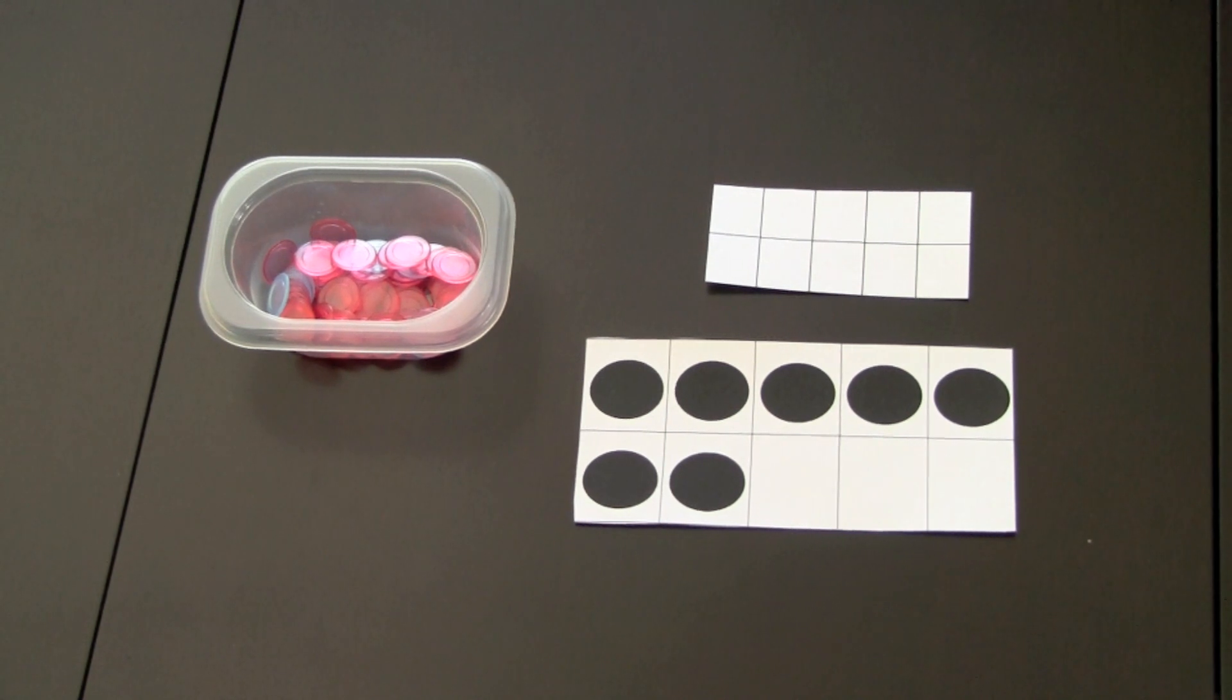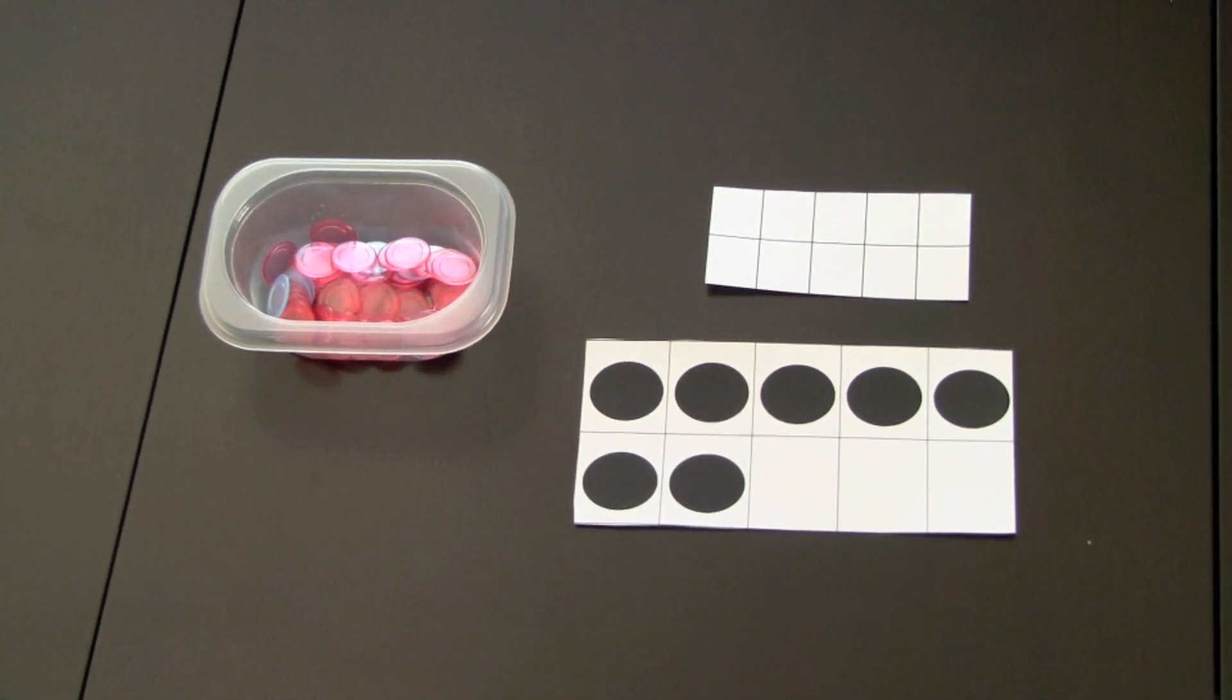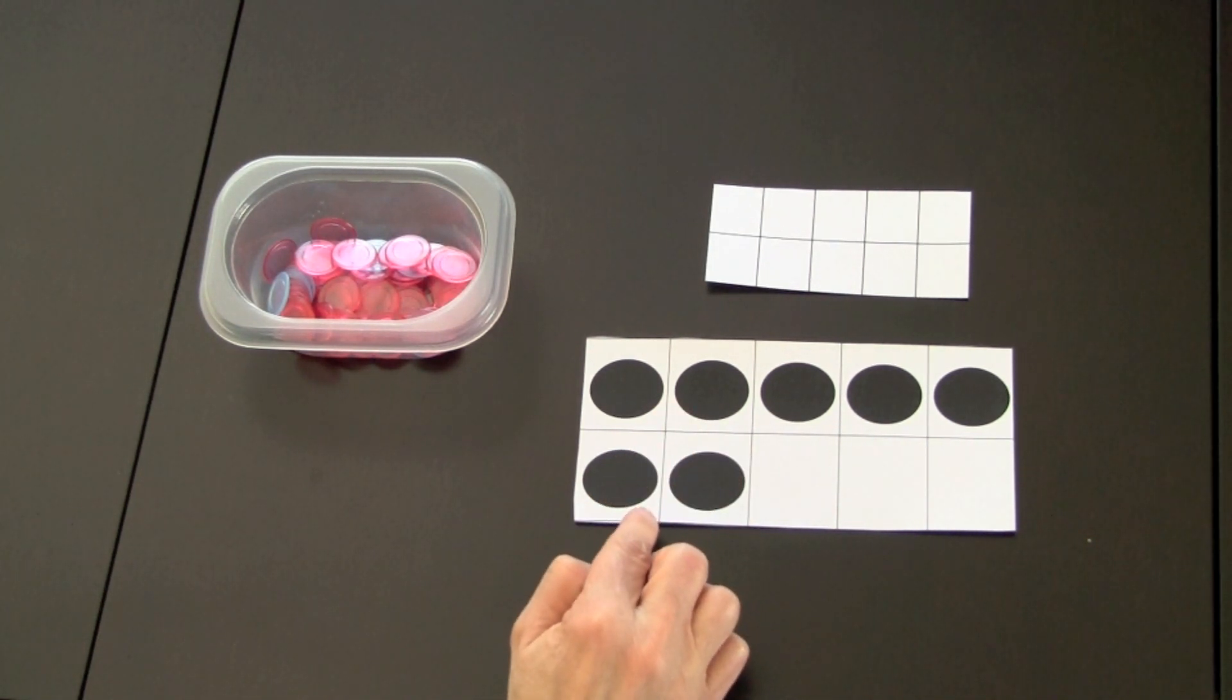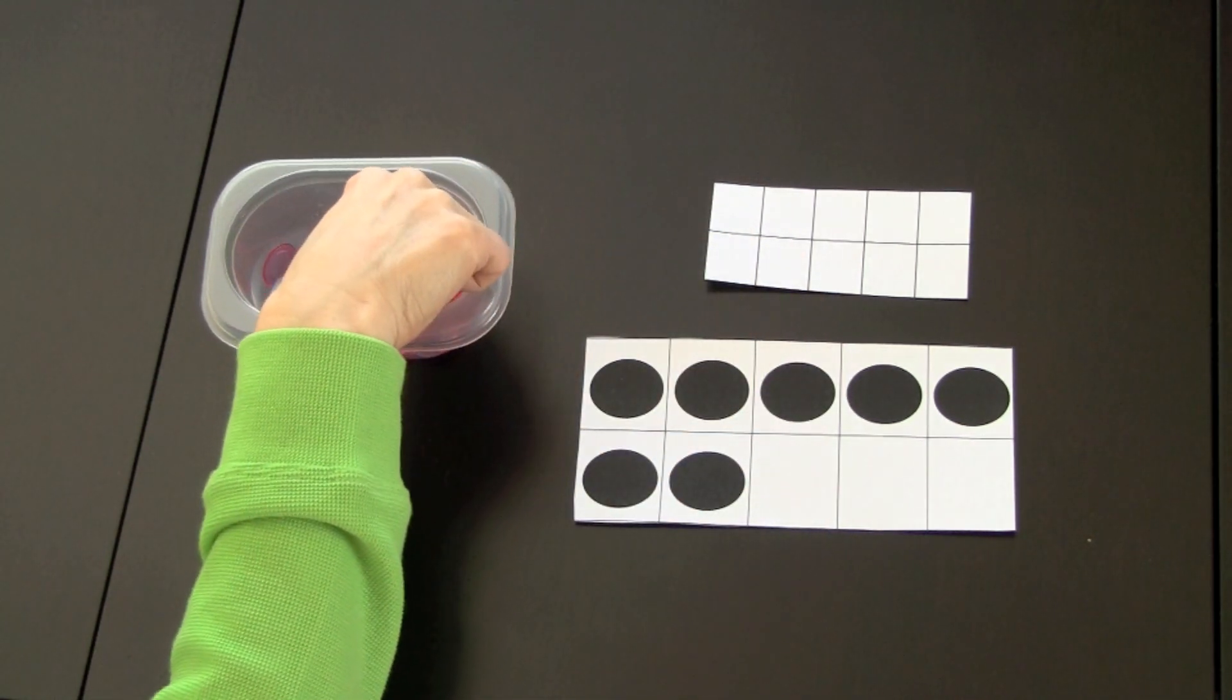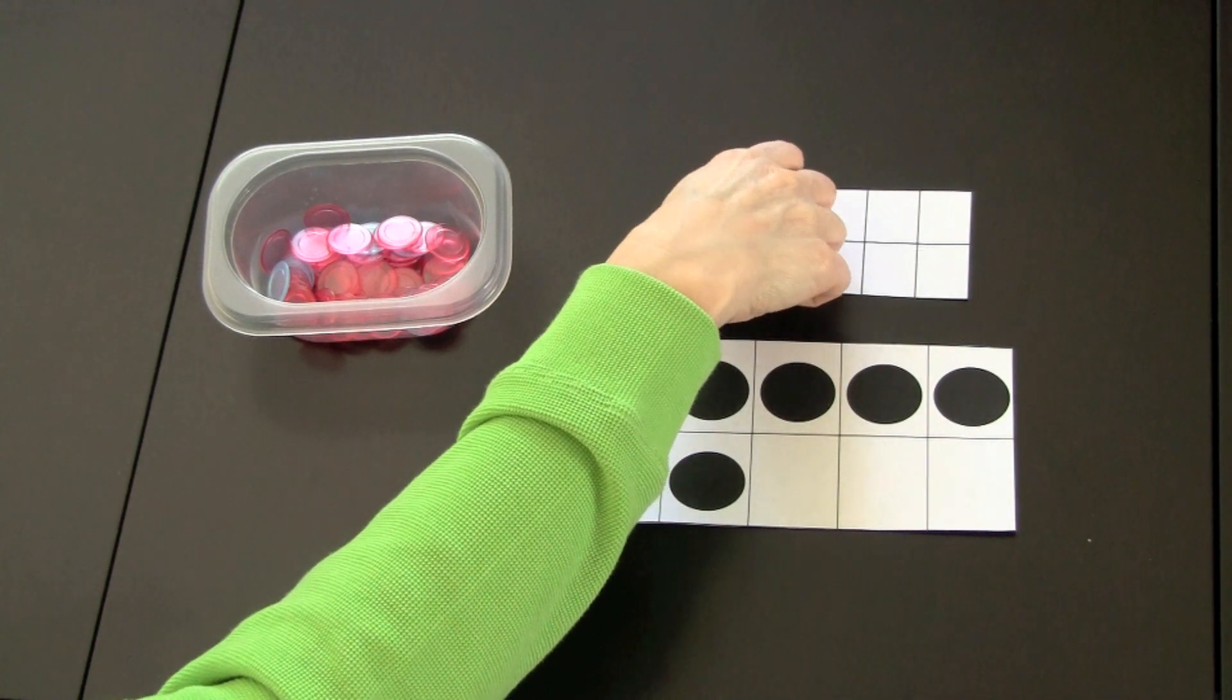In the math program, all new numbers are introduced through the ten frame system. The teacher would show the seven on the ten frames. The children would have their own version of the ten frames and make seven as the teacher demonstrates to them.